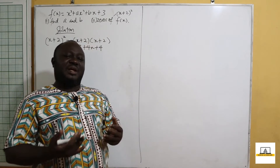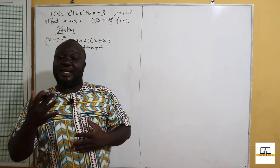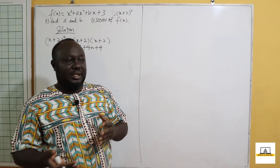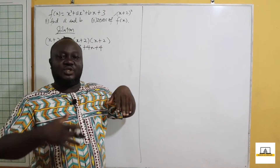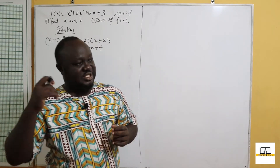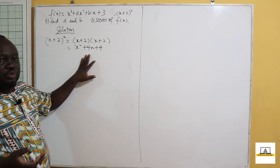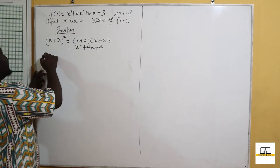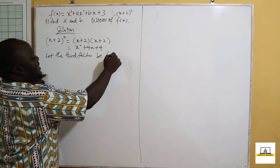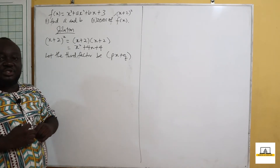Now remember, for a linear function we can write it as ax plus b. A quadratic function will have two terms, and for a cubic function it will have three different linear factors. In this case, we are going to assume that there is a third factor which we don't know. So we are going to let the third factor be px plus q, where p and q are variables we are going to determine.